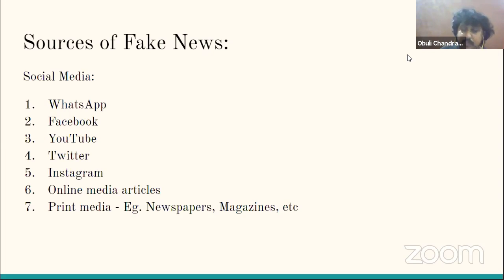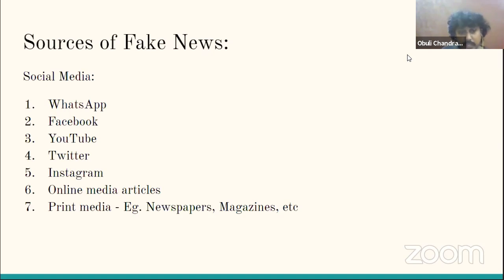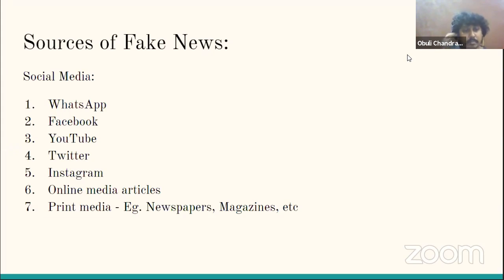Twitter is a powerful platform where fake news can be generated. On Instagram, it's mostly fake pictures and images — Instagram focuses primarily on visual imagery. Then you have online media articles from various outlets. Print media — newspapers and magazines — I'm not focusing on today, but it's worth noting.